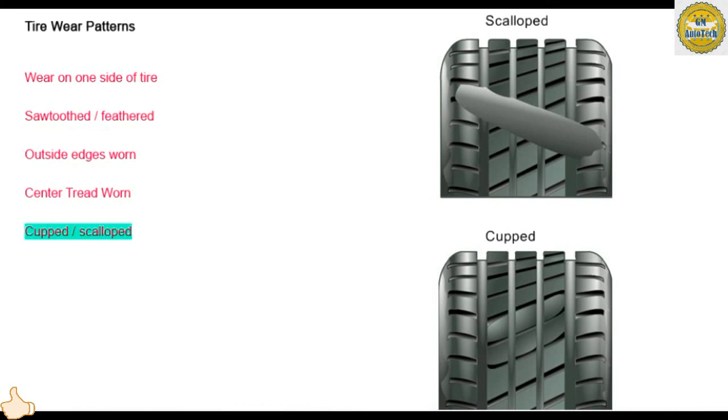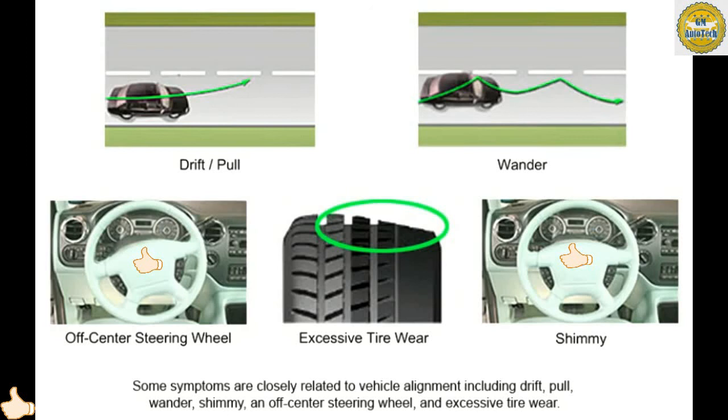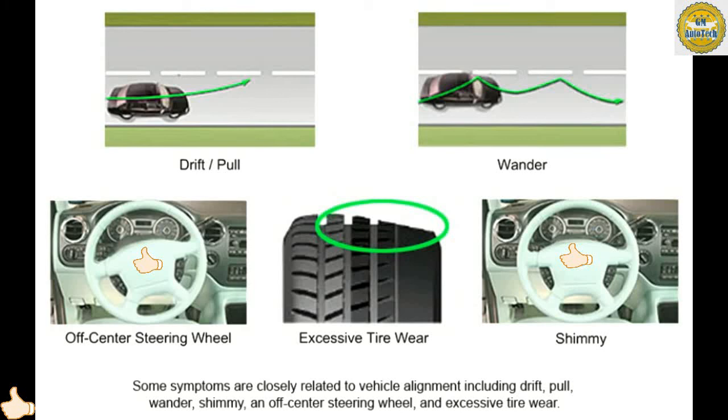Some symptoms are closely related to vehicle alignment, including drift, pull, wander, shimmy, an off-center steering wheel, and excessive tire wear. Worn or damaged components can cause misalignment. Sometimes, symptoms can be caused by factors such as improper vehicle loading or misalignment.